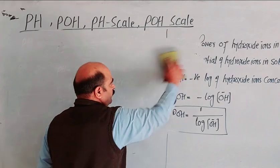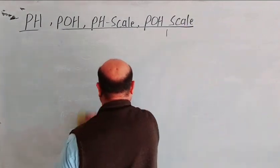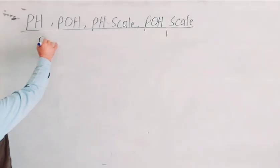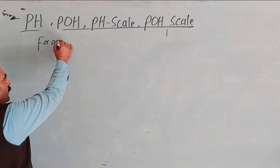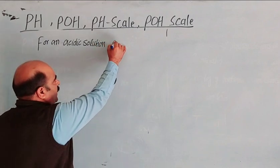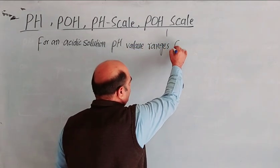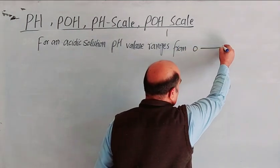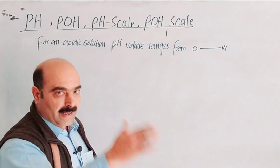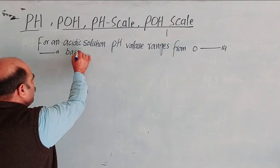For a solution, the pH value ranges from 0 to 14. For an acidic solution, pH values are on the lower end of this scale, while for a basic solution, pH values are on the higher end.